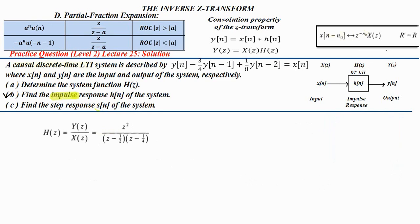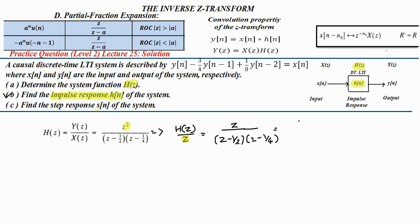Next we find the impulse response h(n). Since H(n) and H(z) are Z-transform pairs, we find h(n) by taking the inverse Z-transform of H(z) using the partial fraction method. For partial fractions, we write H(z)/z, which gives z divided by [(z minus 1/2)(z minus 1/4)], and expand as A/(z minus 1/2) plus B/(z minus 1/4).